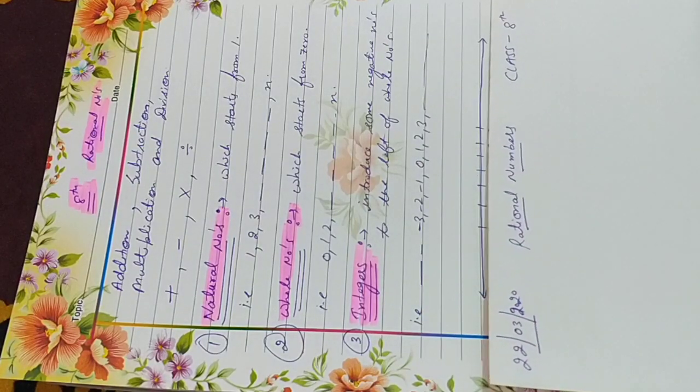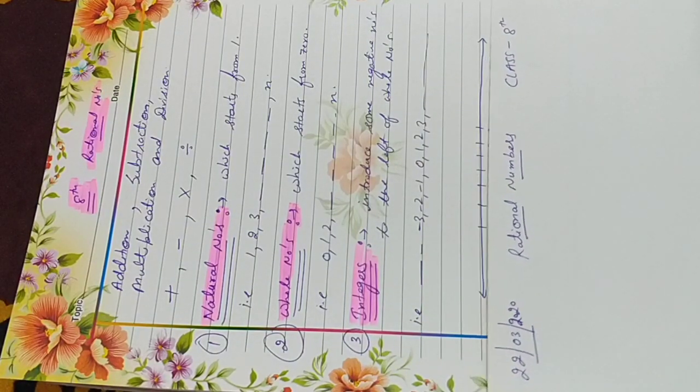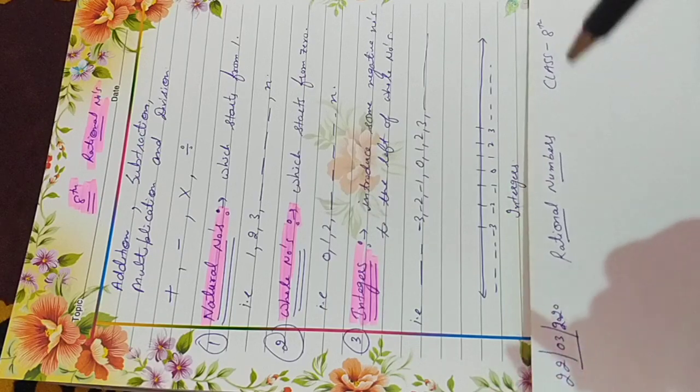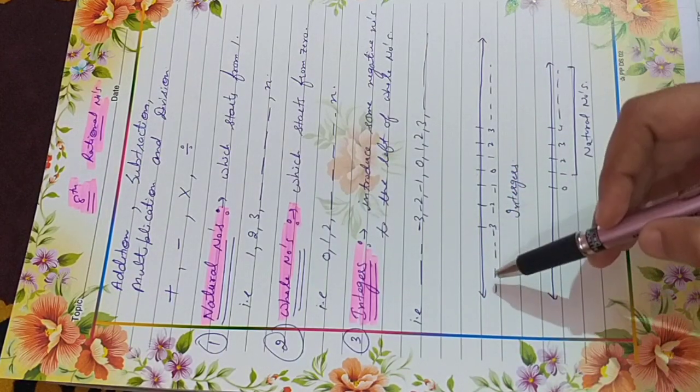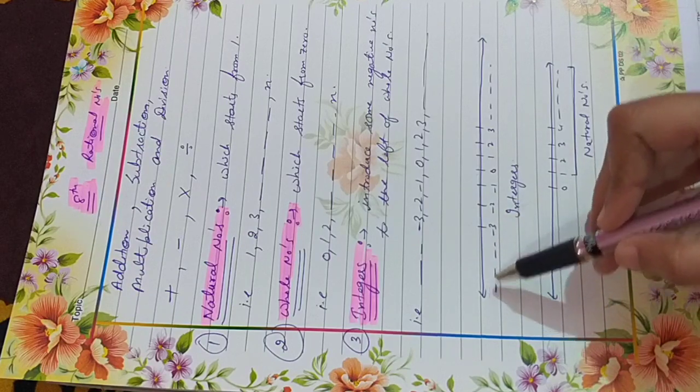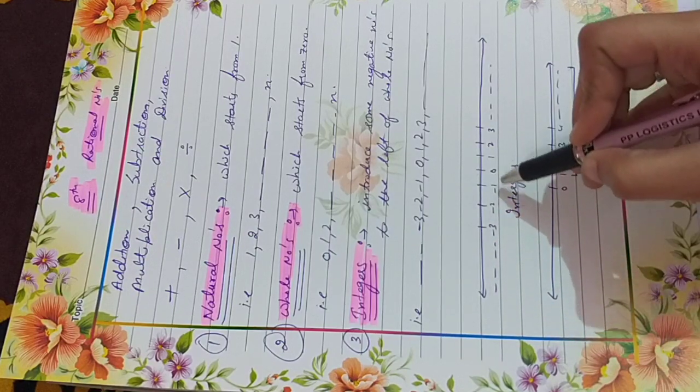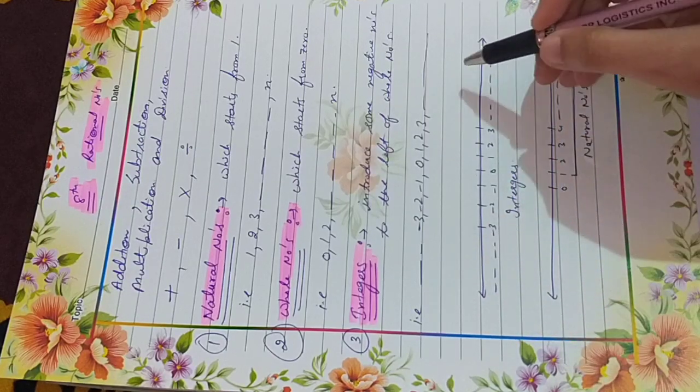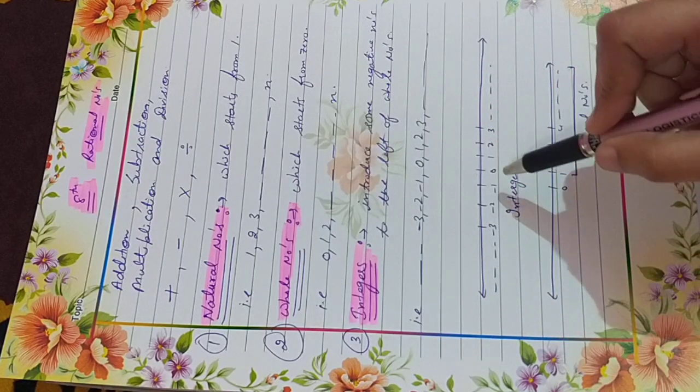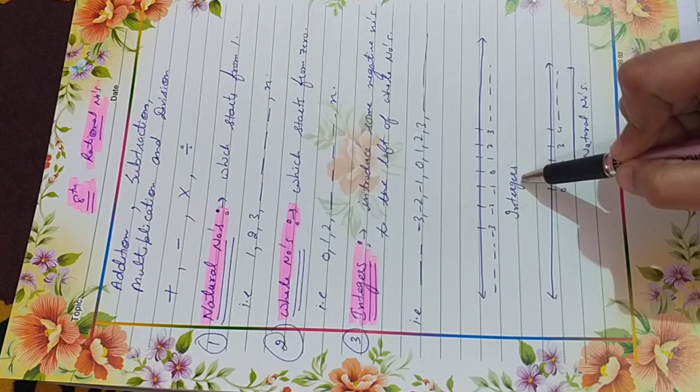Now, we will represent integers, natural numbers, whole numbers on number line. This is called number line. If we represent 0, negative numbers and positive numbers on a single number line, this is called integers.